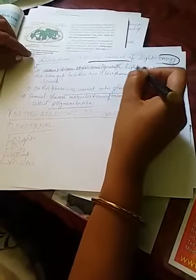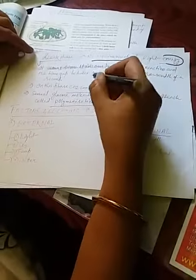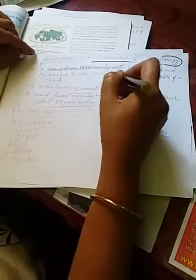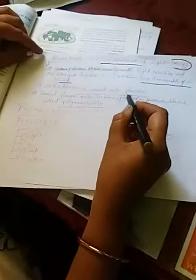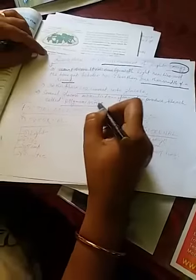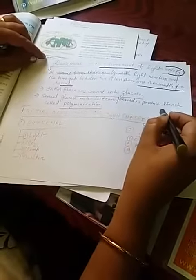And it occurs simultaneously with light reaction and the time gap between the two is less than 1000th of a second. And in this phase carbon dioxide converts into glucose and several glucose molecules transform to produce starch called polymerization.